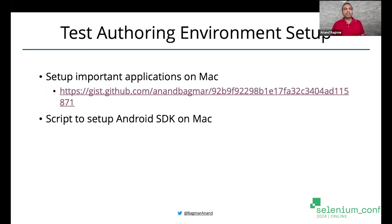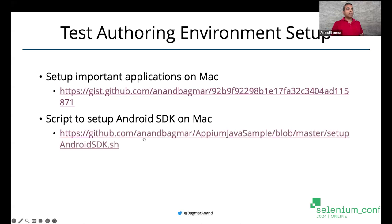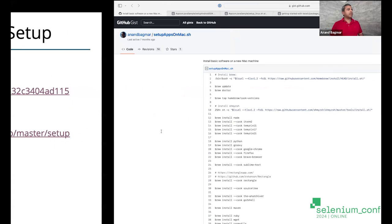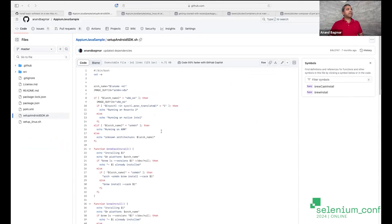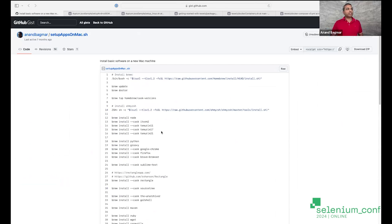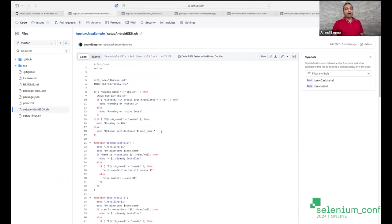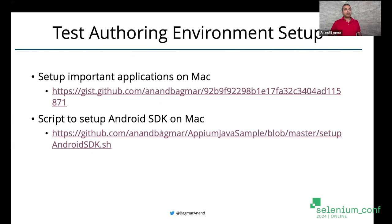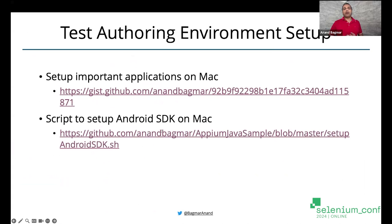If you want to run Android tests, you need to have a basic Android SDK, command line tools, and other utilities set up on your device. For Mac, I have a script available on GitHub where you can simply run it, it will download the command line tools, set everything up, and you have your Android execution environment available on your laptop immediately — in 15 to 20 minutes. You can do the same thing for Linux as well.